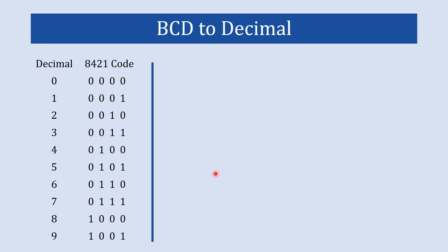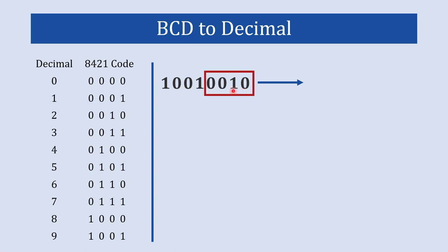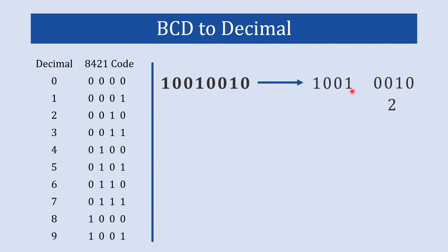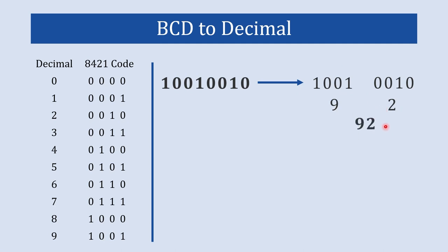Now we will jump to BCD to decimal conversion. Here we have our BCD code. When we start converting BCD to decimal, we start with the least significant bit and create groups of four digits from the LSB side. So 0100 is our first group of four digits, and then 1001 is the second group. Now let us find the decimal equivalent of each group: 0100 is 4, and 1001 is 9. So together it becomes 94. So 94 is the decimal equivalent to this BCD code.